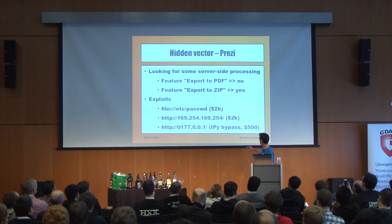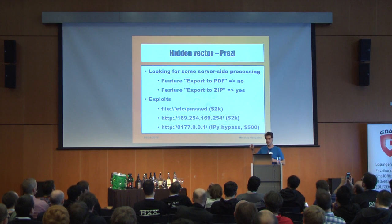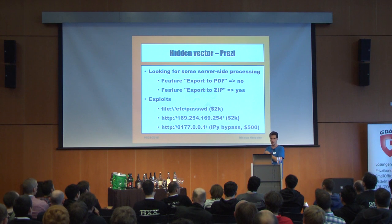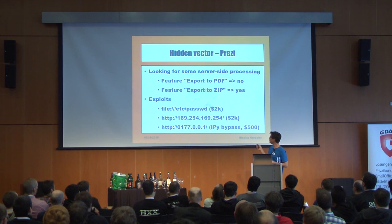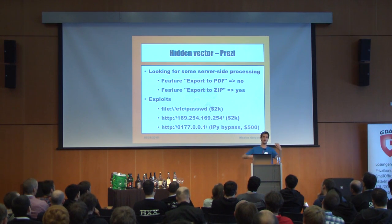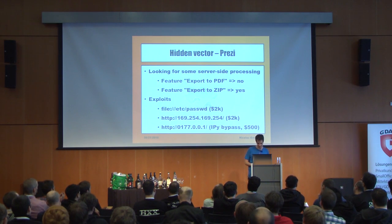Their blacklist uses IPy, a Python library that is not patched. I reported this bypass to them — they didn't patch, so beware if you're using it. I got only $500 because even though I can bypass the blacklist, they have so many defense-in-depth mechanisms that I wasn't able to do anything with it — so $500 just for the IPy bypass.